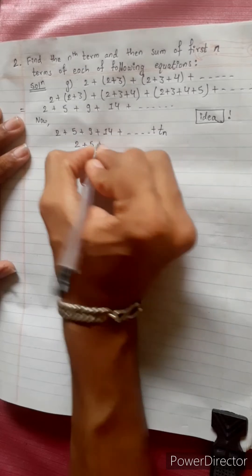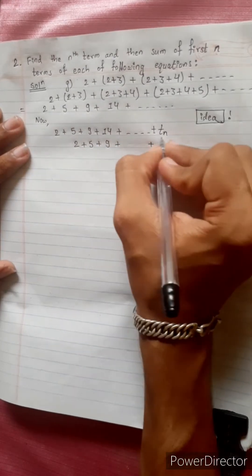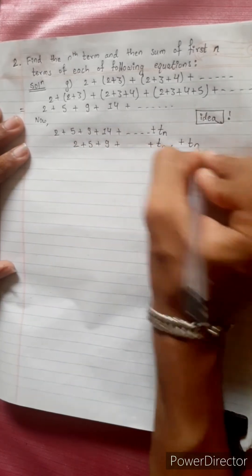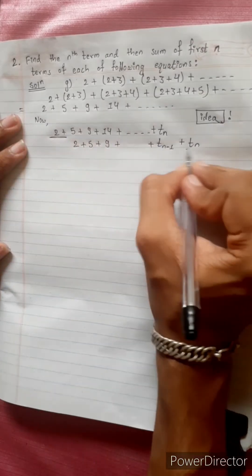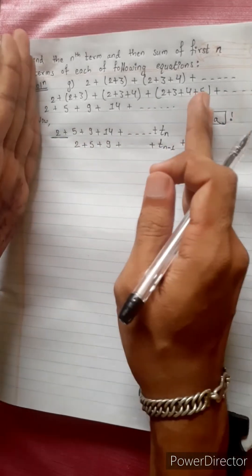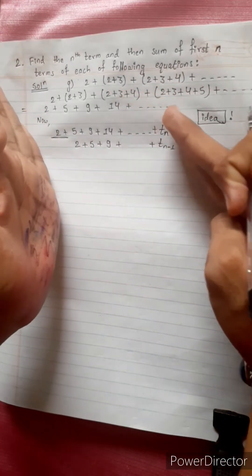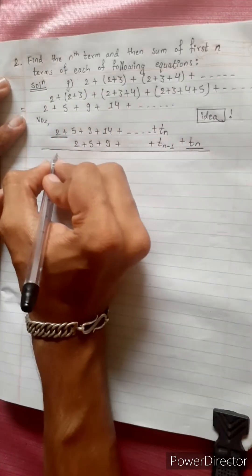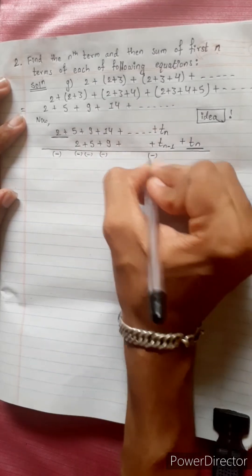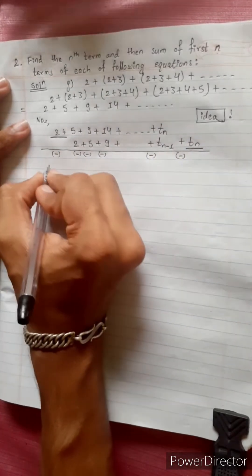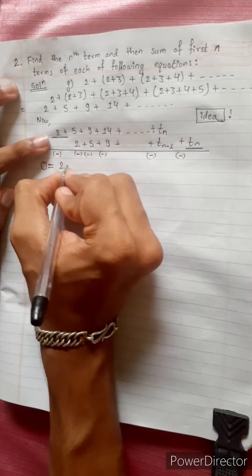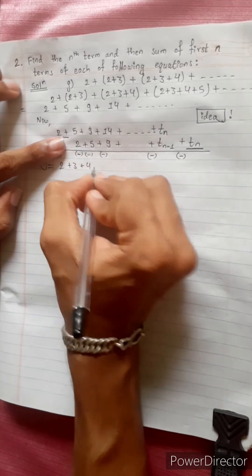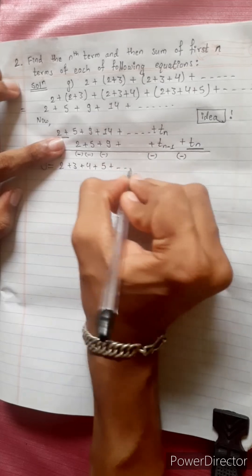The sequence is: 2, 5, 9, 14... Using the telescoping method, T_n minus T_(n-1) gives us the differences. T_1=2, T_2 minus T_1 = 5 minus 2 = 3, T_3 minus T_2 = 9 minus 5 = 4, T_4 minus T_3 = 14 minus 9 = 5, and so on.